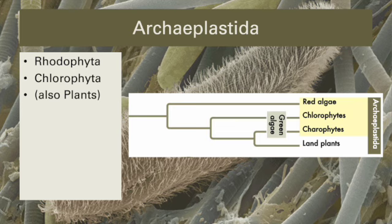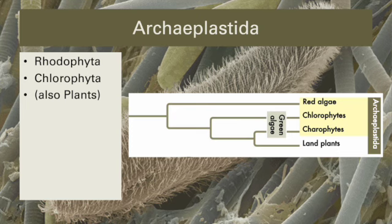Some authors have suggested including all photosynthesizers that are green — the algae and the land plants — into an enlarged kingdom or superkingdom called Viridiplantae, which means green plants. The Archaeplastida diverged from other lineages of eukaryotes early in evolutionary history, but after the first endosymbiosis with the alpha-proteobacterium that would become a mitochondrion. All lineages of eukaryotes have mitochondria or had mitochondria and lost them. Only one lineage has chloroplasts in all members, and that is Archaeplastida.